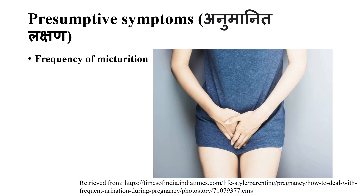In the first trimester, the growing uterus presses on the urinary bladder, leading to increased frequency of urination. This is also a possible presumptive sign of pregnancy.